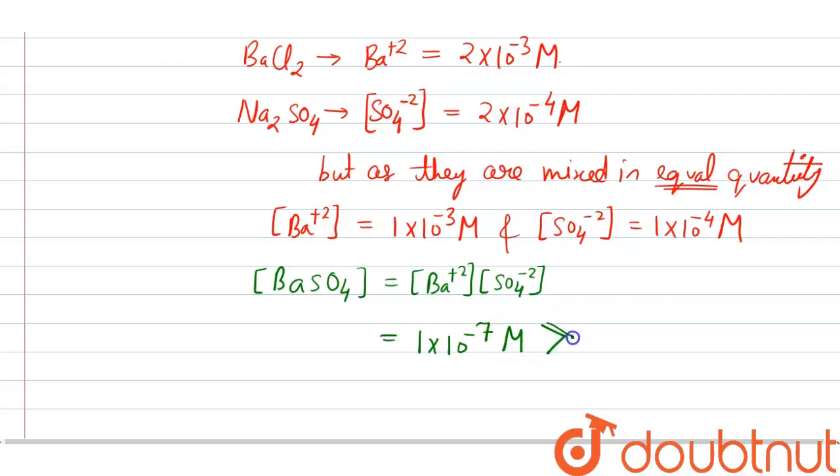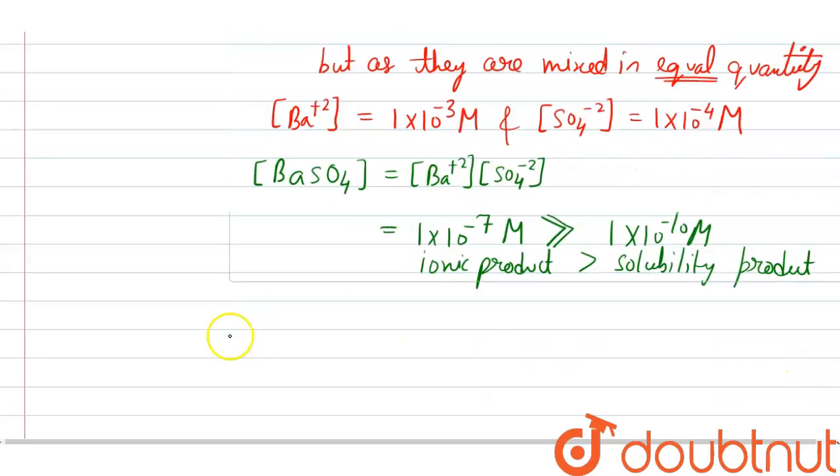But, this ionic product, this is called as ionic product, but this value is greater than 1×10⁻¹⁰, which is called as solubility product. And we know that if ionic product is greater than the solubility product, then the salt will form precipitate.